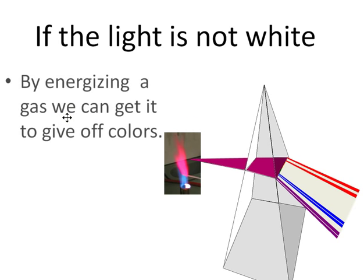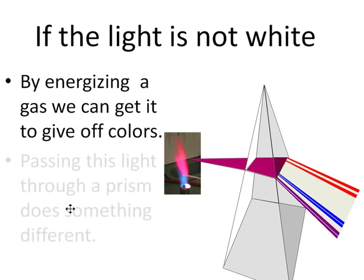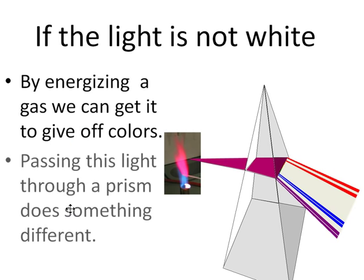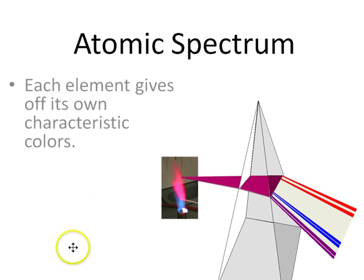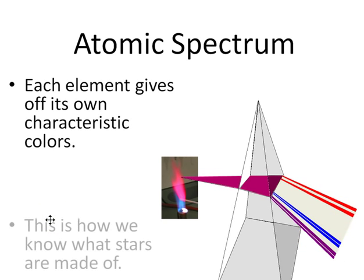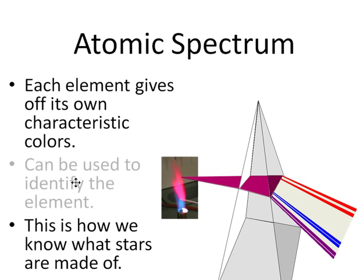So by energizing a gas or by energizing these metal salts like we did in the flame test lab, you can get it to give off certain colors. If you pass that light through a prism, something different happens. Each element gives off its own characteristic colors as seen here by these bands. There's two different shades of red, two different shades of blue, and two different shades of purple here in this diagram. And this is actually how we know that stars are made up of different elements. But here, so we can use this tool to identify the elements that are present, whether it's in the flame that we're burning or whether or not it's in the star up in the sky.